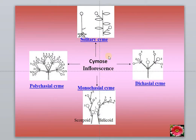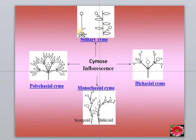Looking at the diagram, the upper side shows cymose inflorescence types. On the right side diagram, a plant is producing only a single flower and it is having a bract. When a flower is a single pedicellate flower with a bract, that is called a solitary cymose inflorescence.